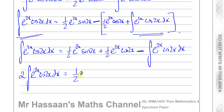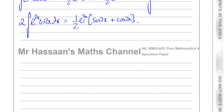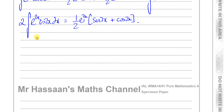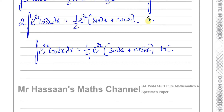I can take (1/2)e^(2x) out of those two terms, giving sin(2x) + cos(2x). Now I can write the answer: the integral of e^(2x)cos(2x) dx equals (dividing both sides by 2) (1/4)e^(2x)(sin(2x) + cos(2x)) + c. Don't forget the plus c — with integration by parts you can write the plus c at the end.